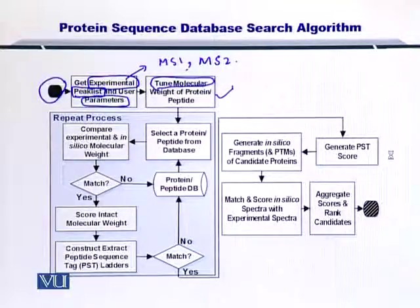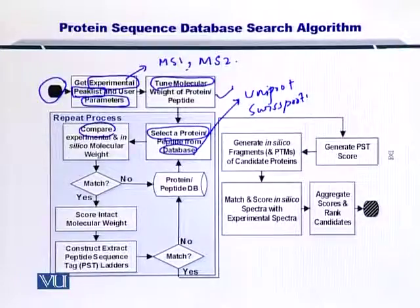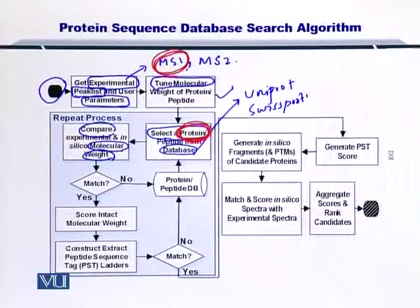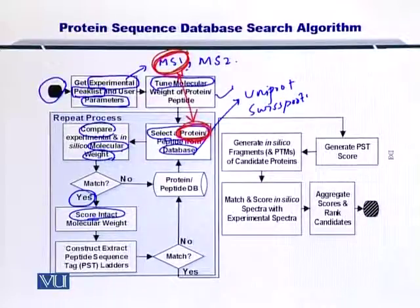Next, you select a protein or peptide from a database, which can be UniProt or SwissProt. Once you have selected a protein, you compare the molecular weight of this protein from the database with the mass from MS1. If these molecular weights match, then you can create a score. If you have a score for the intact molecular mass which is good, it can be quite useful. However, it may not be good enough to give you a final say on the protein.